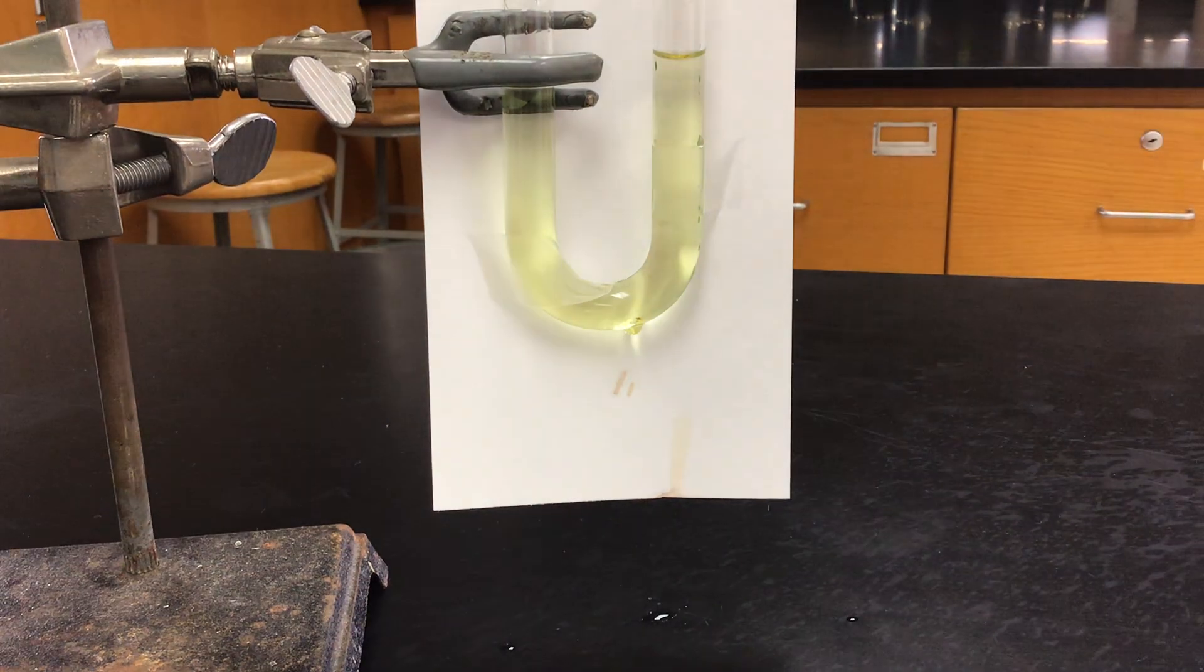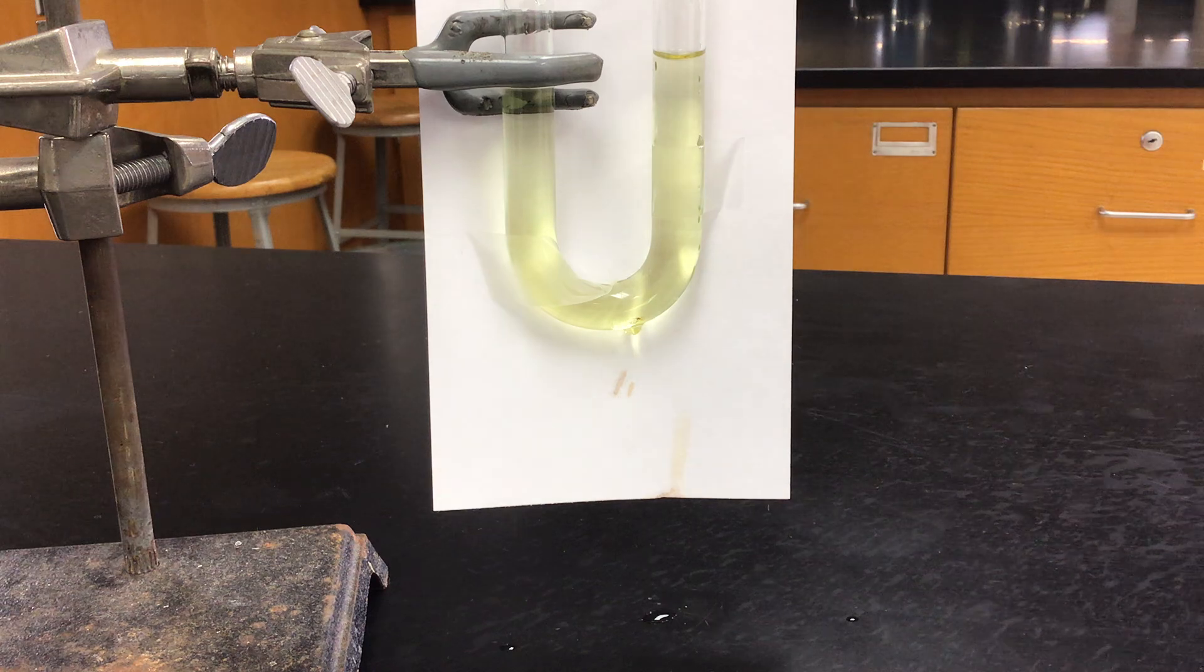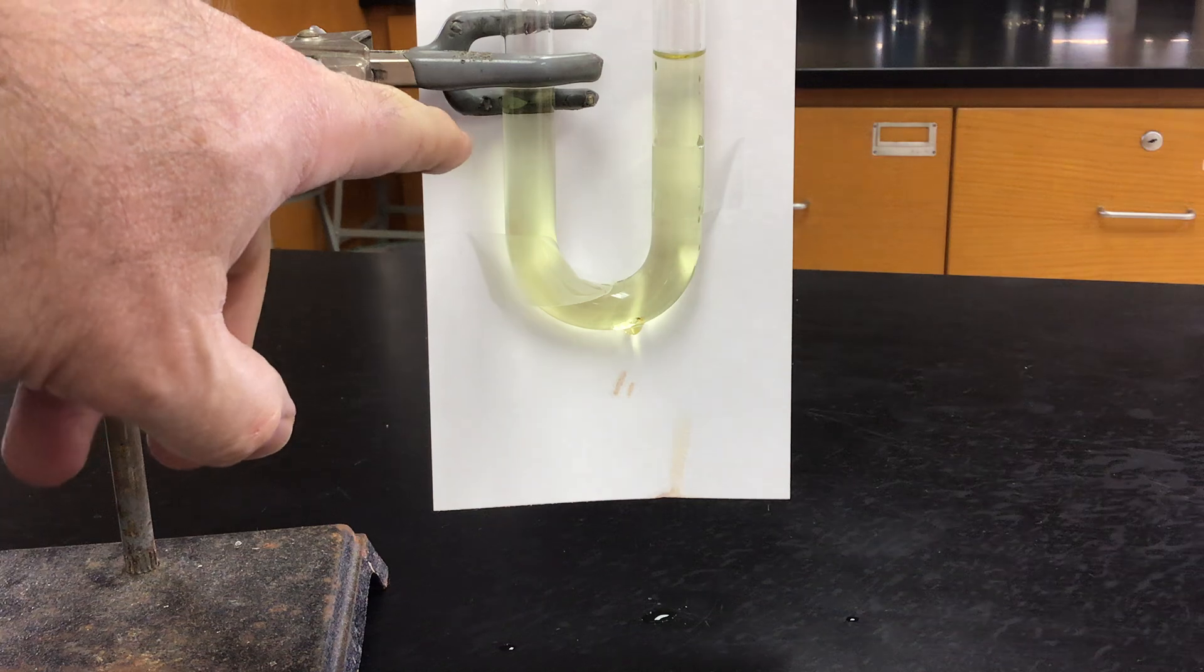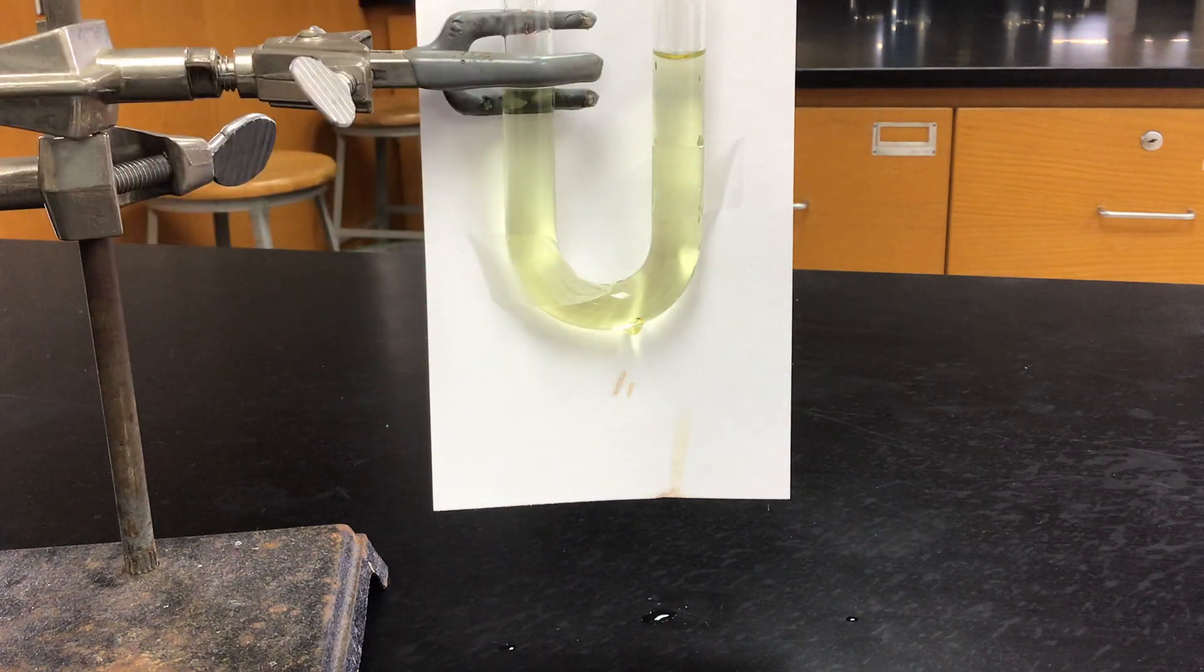I'm going to take these out and drop in some universal indicator. Now, I had the electrode set up in the same configuration, so I think iodine was forming on this side, left-hand side.